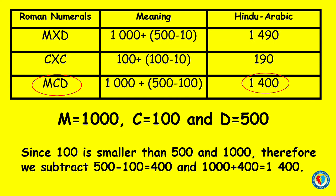Another example: MCD. M is equal to 1,000, C is equal to 100, and D is equal to 500. Since 100 is smaller than 500, we subtract 500 minus 100 equals 400. And 1,000 plus 400 equals 1,400.